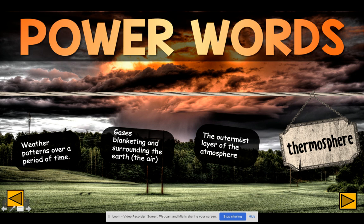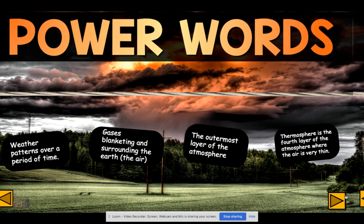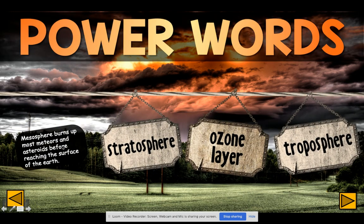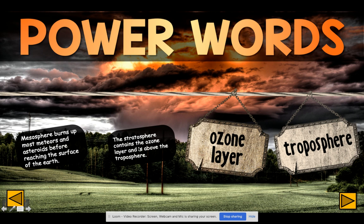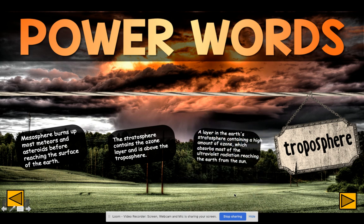An exosphere, which is the outermost layer of the atmosphere. Your thermosphere, which is the fourth layer of the atmosphere where the air is very thin. Then we have the mesosphere, which burns up most meteors and asteroids before they ever even reach our earth. Then we have the stratosphere, which contains the ozone layer and it's above the troposphere.